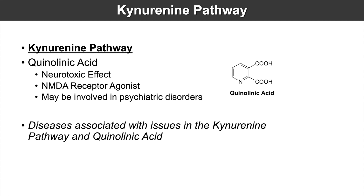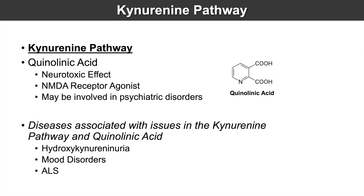The kynurenine pathway may result in reduced serotonin production, which would reduce serotonergic activity and may lead to psychiatric issues such as depression. Other diseases associated with issues in this pathway include hydroxykyunureninuria, a genetic condition due to deficiency in the enzyme kynureninase. Mood disorders such as major depressive disorder, ALS (amyotrophic lateral sclerosis), and Parkinson's disease have also been associated with disruptions in the kynurenine pathway, along with several other conditions.